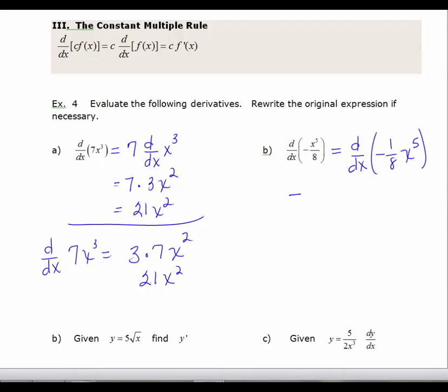So your goal here is to rewrite this as a constant times some power function. And so now we can take the derivative. The first step was to rewrite. We'll bring the 5 down. We multiply it by the negative 1/8. And then we have x to the 5 minus 1, which is 4, giving us negative 5/8 times x to the fourth. Or, you could leave it as negative 5x to the fourth over 8. Algebraically, those are equivalent expressions.